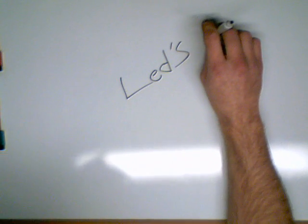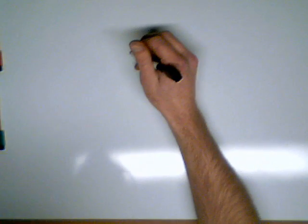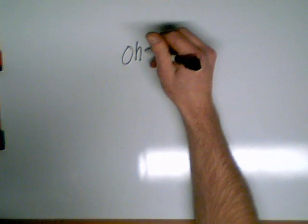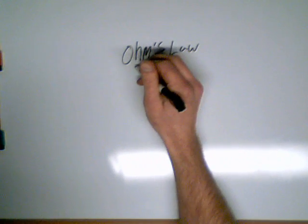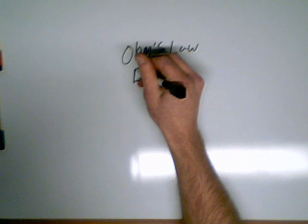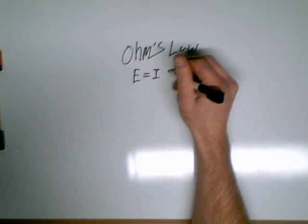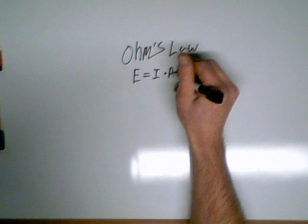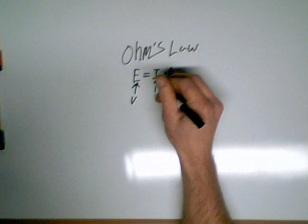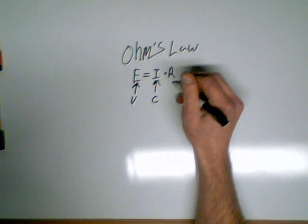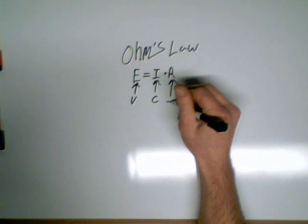All right, to start off, let's go over Ohm's Law. Ohm's Law is E equals I times R. E stands for voltage, I stands for current or amperage, and R stands for resistance or ohms.